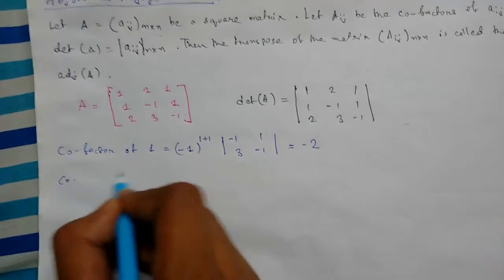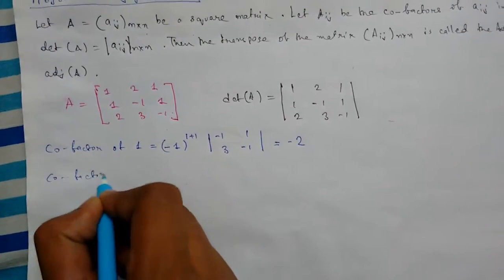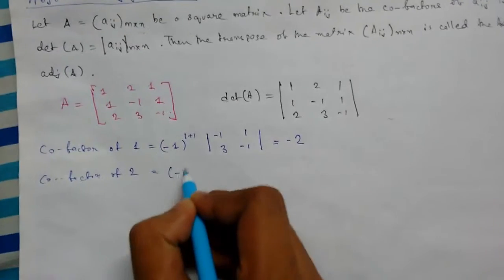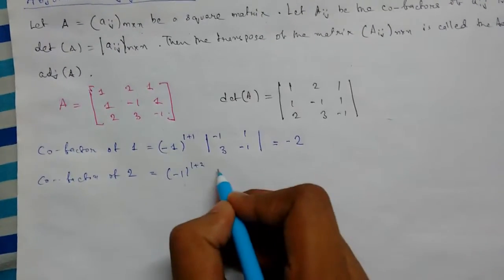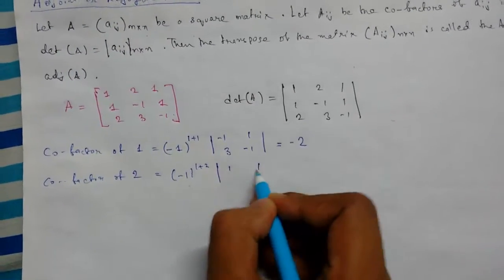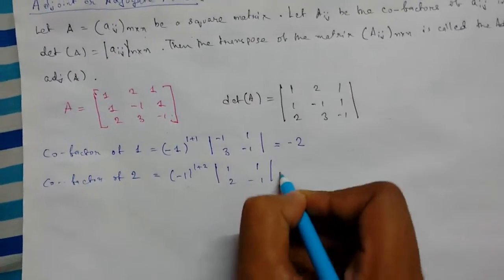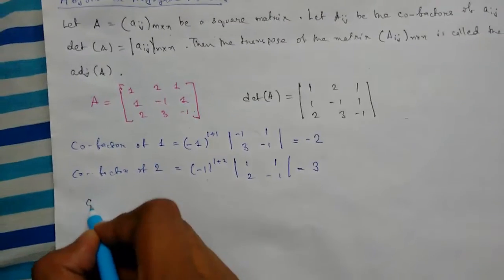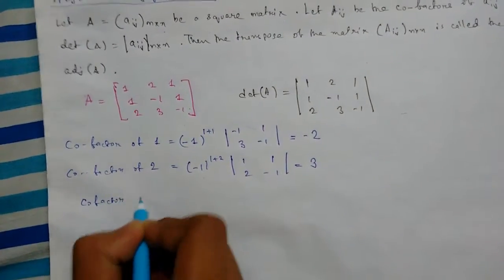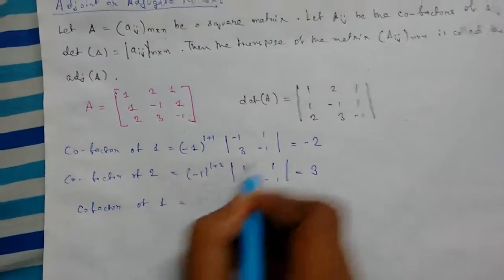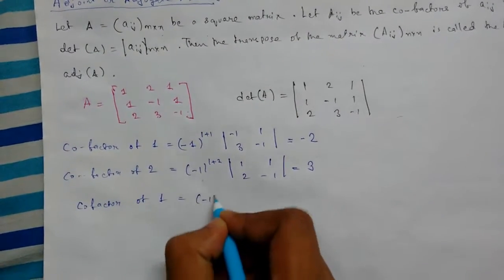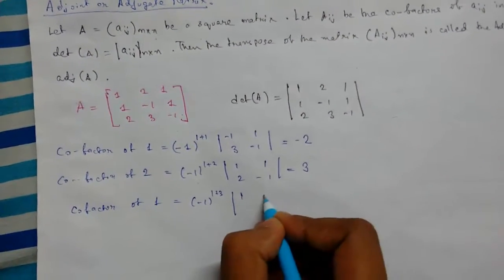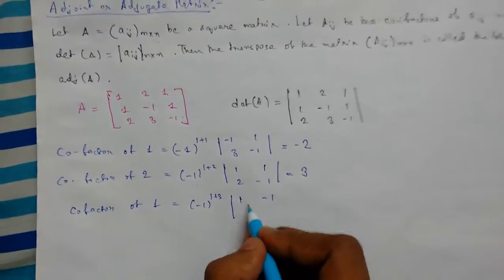Cofactor of 2: (-1)^(1+2) times the minor, giving us 1, 1, 2, -1, which evaluates to 3. Cofactor of the third element 1: (-1)^(1+3) times 1, 1, 2, 3, which gives 5.